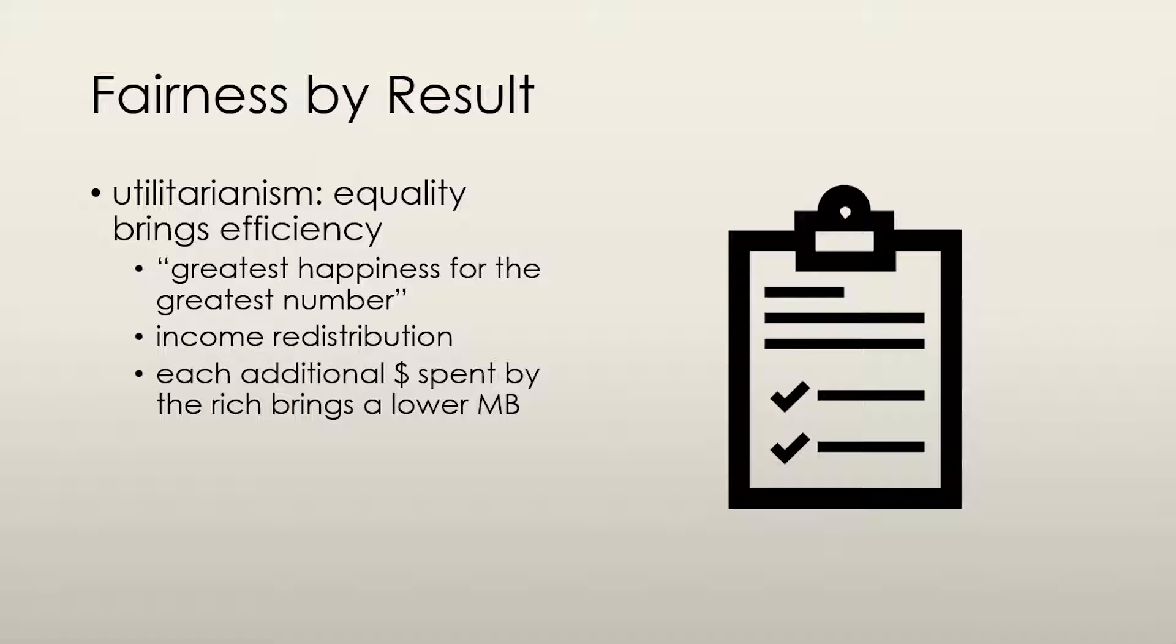There was this idea in the 19th century called utilitarianism, and the concept is that only equality brings happiness. This idea argues that we should try to achieve the greatest happiness for the greatest number. In essence, it says that we should redistribute income from the rich to the poor to the point of complete equality. The reasoning was that everyone has the same wants and needs, but each additional dollar spent by the rich brings them a lower marginal benefit.